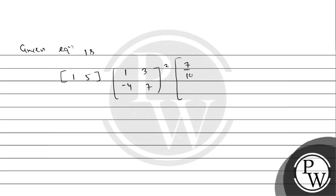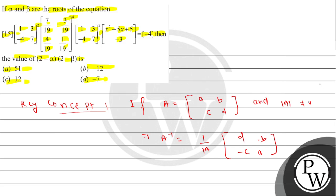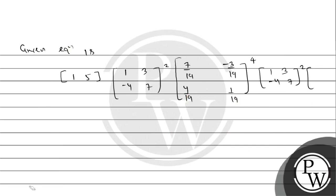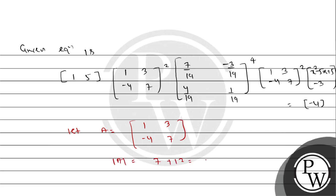Then the inverse matrix [7/19, -3/19; 4/19, 1/19] to the power 4, then matrix [1 3; -4 7] squared, and then the column matrix [x²-5x+5; x²-5x+5]. Lastly, we have column matrix [4; -3]. We observe that A inverse equals 1/19 times the adjusted matrix.